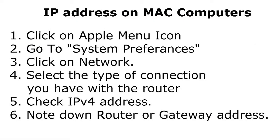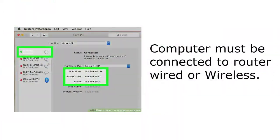To check the IP address on a Mac or Apple computer, click the Apple icon, go to System Preferences, and click on Network. Select the type of connection you have with the router — Ethernet for a cable connection, or wireless. On this screen you will see the IP address, subnet mask, and router number (the Default Gateway). Note down the router IP address.